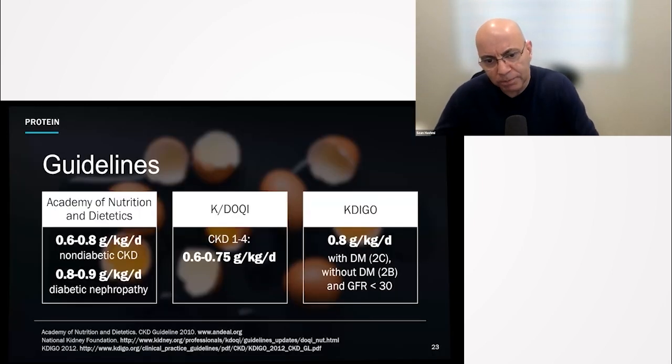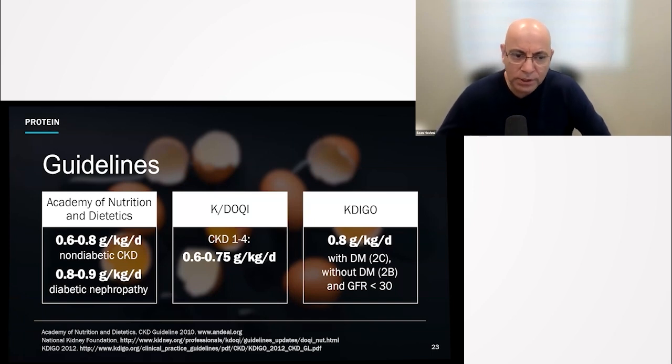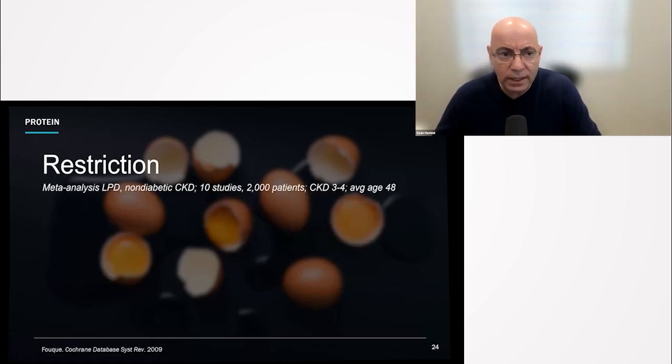So with protein, the guidelines are pretty interesting. Essentially, what you want to remember is in patients who have chronic kidney disease, generally speaking, we're talking about 0.6 to 0.8 grams per kilogram per day of protein. We recommend more plant-based proteins because they are less acidic.